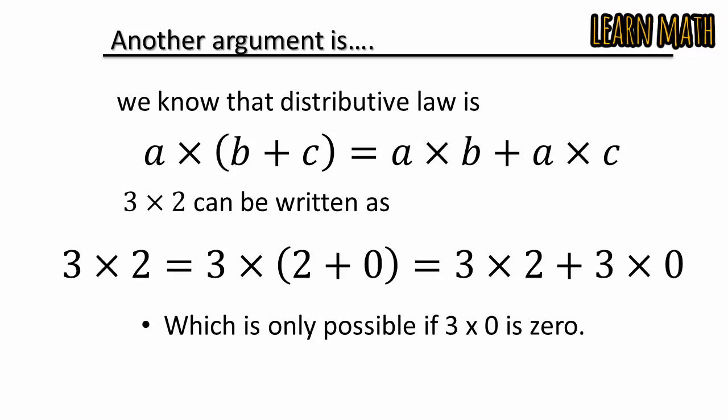By these two arguments, we can say that 0 multiplied by any number is 0. Thank you so much.